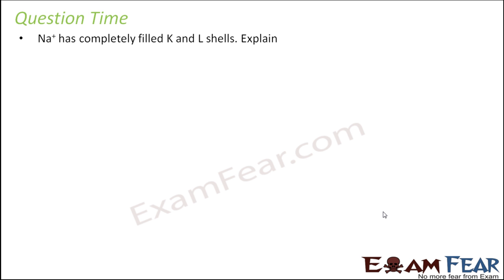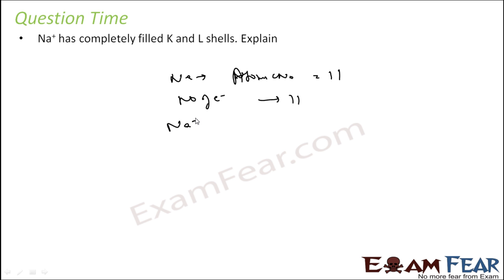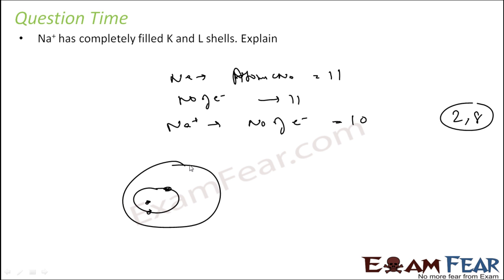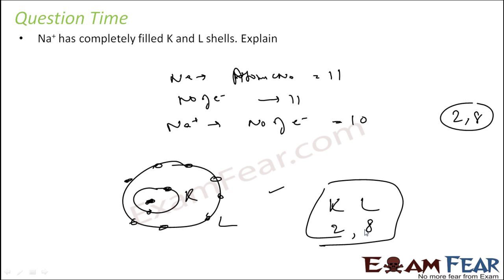Na⁺ has completely filled K and L shells — explain. Sodium's atomic number is 11, so the number of electrons in sodium is 11. Na⁺ means it has lost one electron, so the number of electrons will be 10. The electronic configuration will be 2, 8. So K shell has 2 electrons and L shell has 8 electrons — both K and L shells are filled.